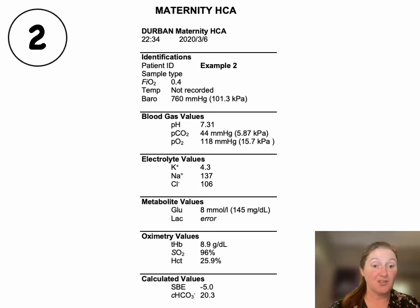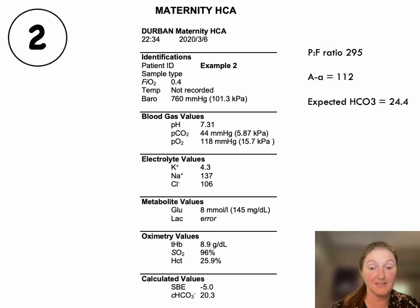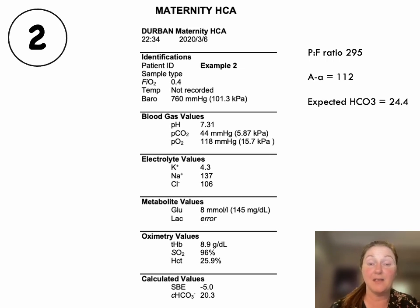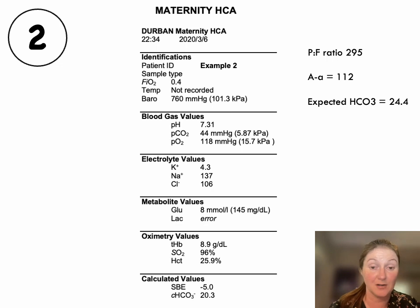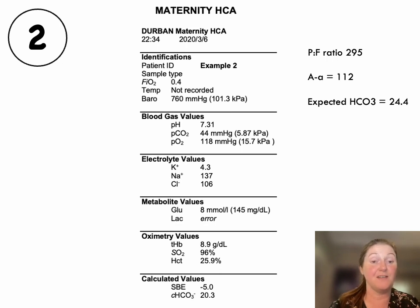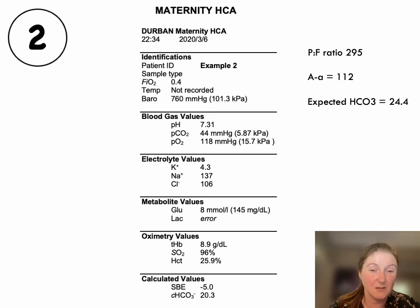Looking at oxygenation: her PO2 is 118 and her PF ratio is 295 — slightly hypoxemic but okay on 40% oxygen. The calculated AA gradient is 112, which is definitely abnormal for her age and can be shunt-related to consolidation. If she aspirated intraoperatively, we'd need a good clinical exam. There could also be atelectasis collapse secondary to positioning and general anaesthetic. Her pH is 7.31 — an acidosis — and her PCO2 is 44. At term in pregnancy we'd expect the PCO2 to be 30–35, so this is a respiratory acidosis.